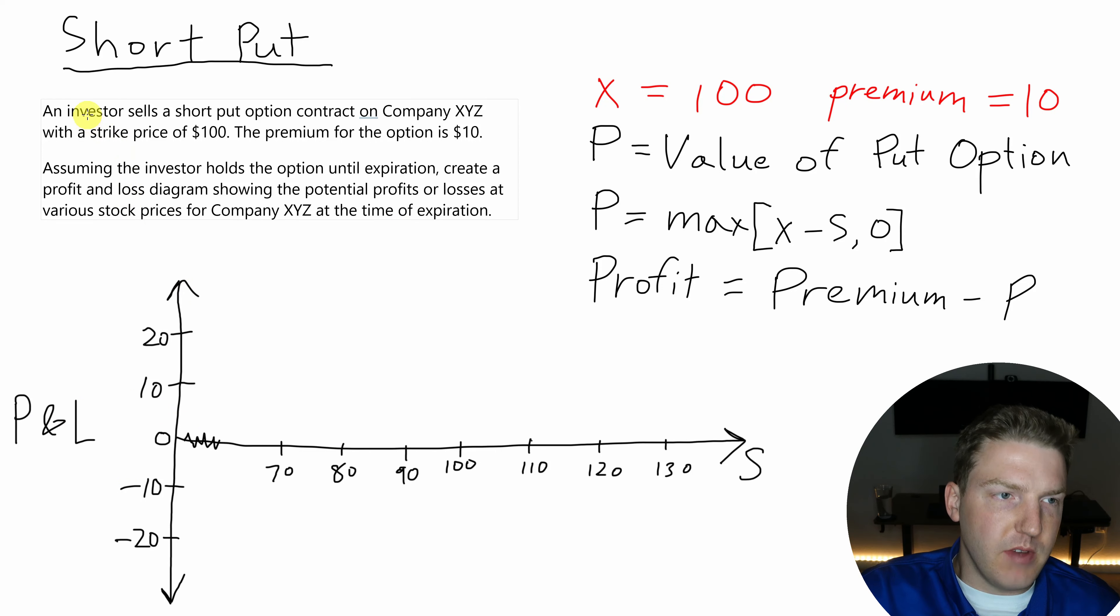What if the investor in question is actually short a put option? So this investor sells a short put option contract for a strike price of $100 and a premium of $10. So all this stuff is the same up here. And then now we have this put option, the value of the put option, which is the same as when the investor was long the put option. That's just going to be equal to the maximum of the exercise price minus the strike price or $0.